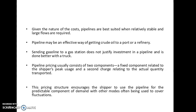Pipeline pricing usually consists of two components: a fixed component related to the shipper's peak usage, and a second charge relating to the actual quantity transported. This pricing structure encourages the shipper to use the pipeline for the predictable, constant component of demand, while other modes are used to cover any flexible or variable demand — allowing effective use of facilities at a lower cost.